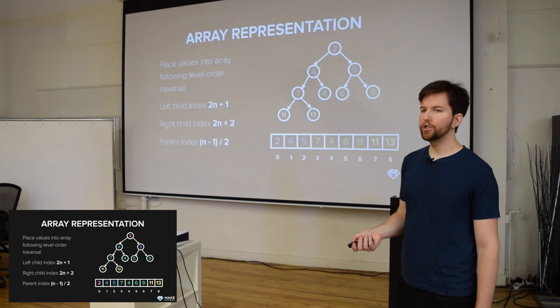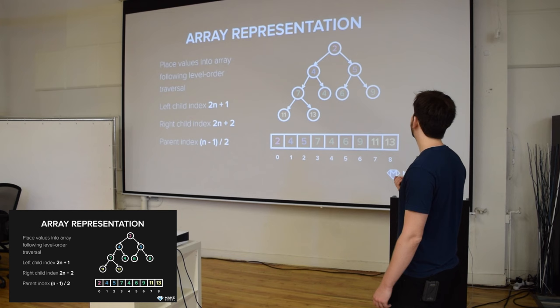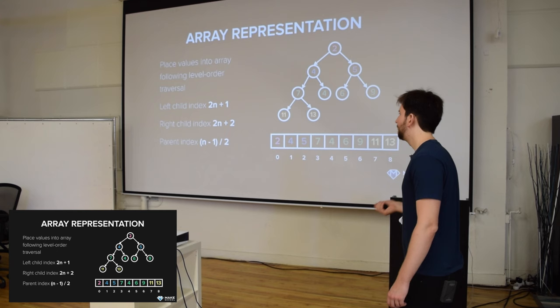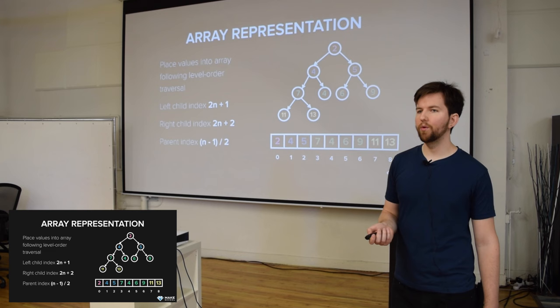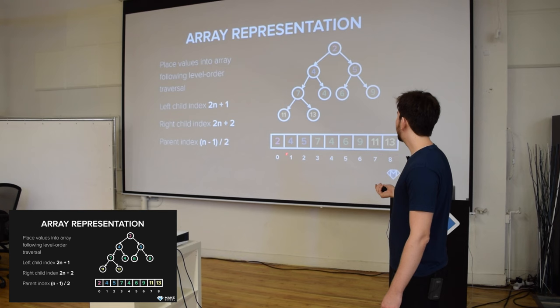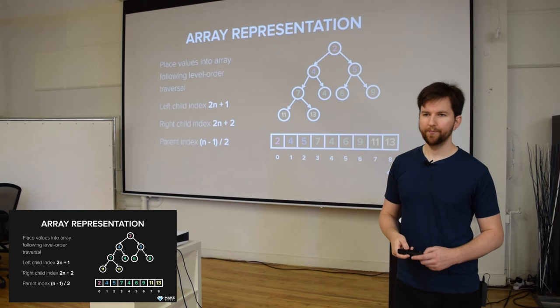You can also calculate the parent index for any given child — you just take the index minus one divided by two. So if we wanted to find the parent of this green four, well, that green four is at index four. Four minus one is three, divided by two is one and a half — we truncate it. Then we look at index one and we can see the blue four is there, so we correctly calculate the parent of the green four.